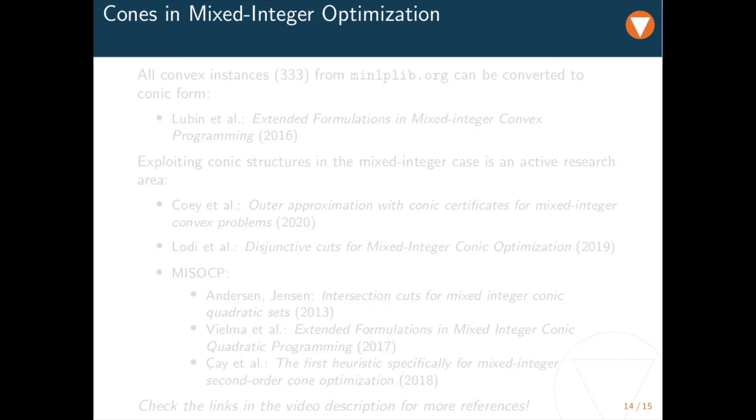Also in the mixed integer case the conic framework is getting more and more attention, and methods to solve mixed integer non-linear problems, such as non-linear branch and bound, can be applied. On the one hand it seems that the generality of the conic framework carries over from the continuous optimization folklore to the mixed integer world. Recently it has been shown that all convex instances of one of the most used MINLP libraries can be converted to conic form using only four of the five cones from the extremely disciplined programming framework.